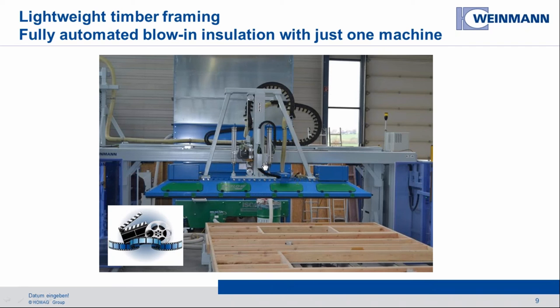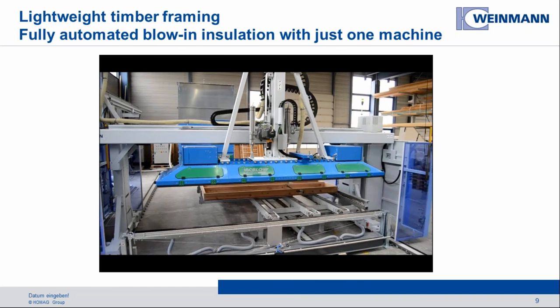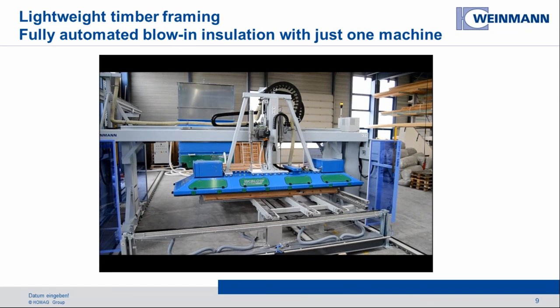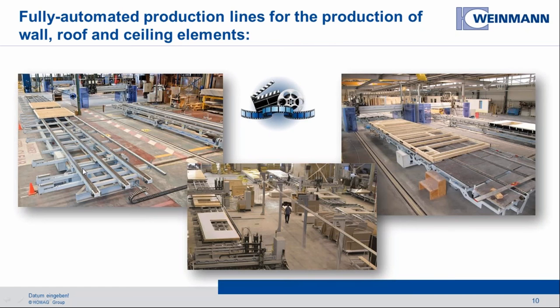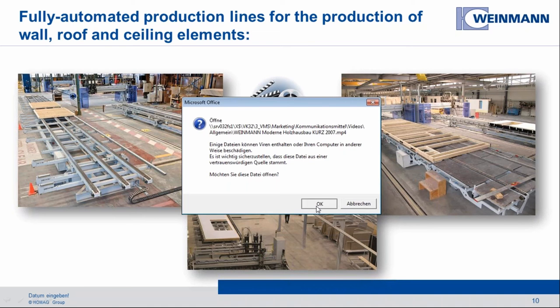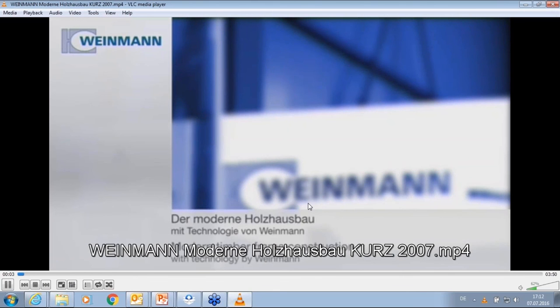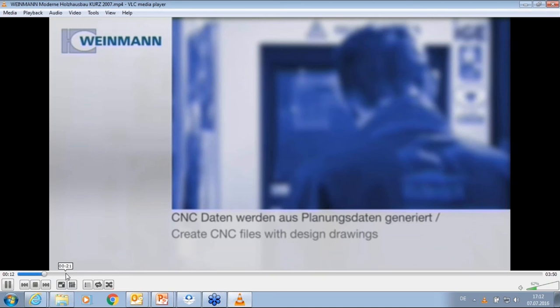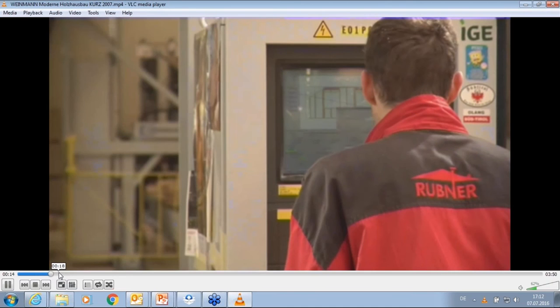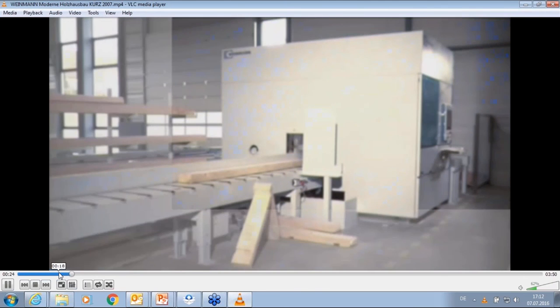This is a new development from us: a machine for automatically insulating panels, whether with cellulose, wood fiber, or mineral wool. It runs fully automatically and we get the information directly from the CAD system about how much to put into each opening, including where windows, doors, etc. are located. In this short video we can see all the steps to produce the elements.